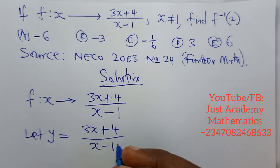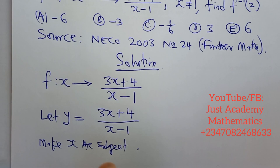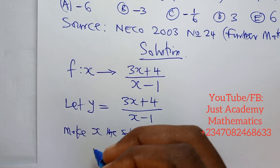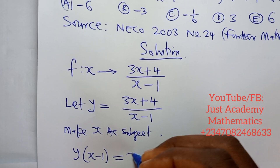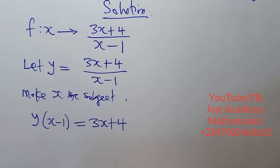Making x the subject: if we make x the subject we'll have y times (x-1) equals 3x+4. Remember we're interested in making x the subject of the equation, so we need to open the bracket.